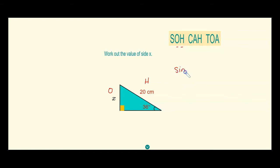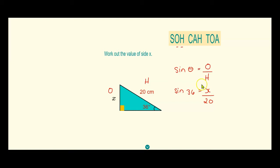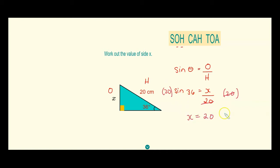Using sine, we're going to find the value of side x. Sine theta is equal to opposite over hypotenuse. Substituting the given values: sine of 36 is equal to x over 20. To find x, we're going to multiply both sides by 20 — the balancing method — cancelling 20, leaving x equal to 20 times sine 36.